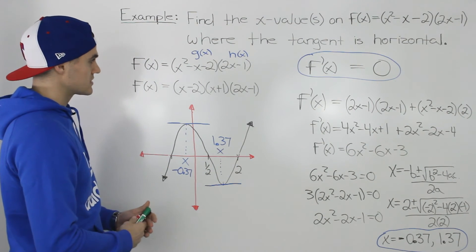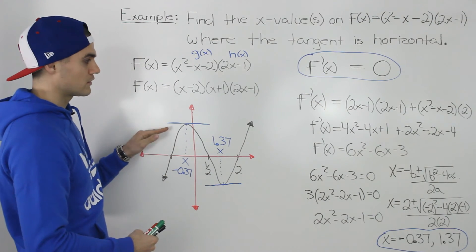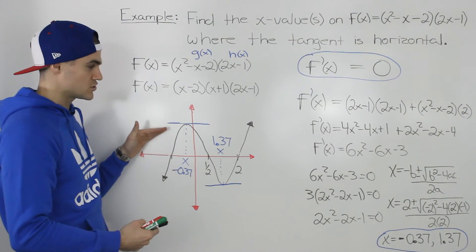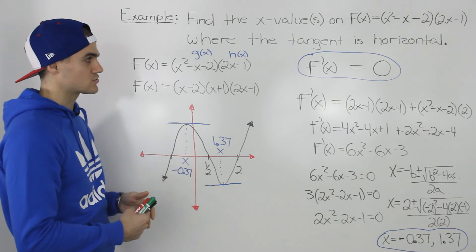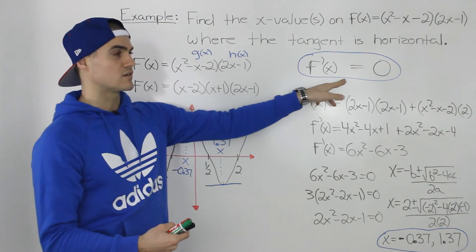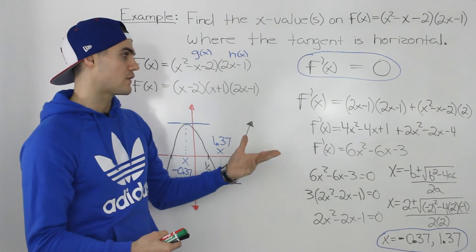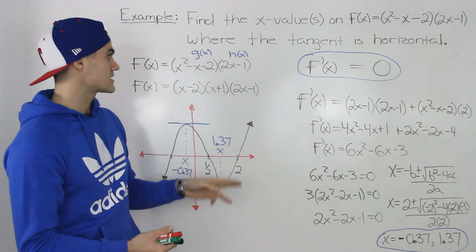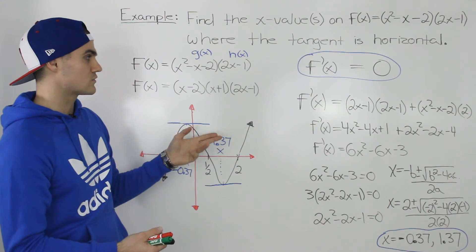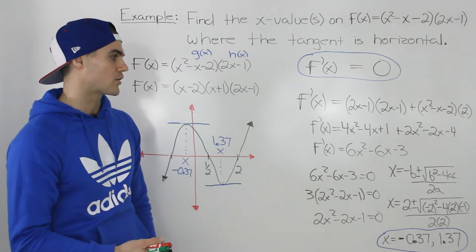So pretty simple. It's not too bad. All you have to do when you're finding the points at which a tangent on a function is horizontal is you just make the derivative equal to 0. And then finding the derivative depends on the specific case you're working with. In this case, we're multiplying two functions. So to find the derivative, we use the product rule.